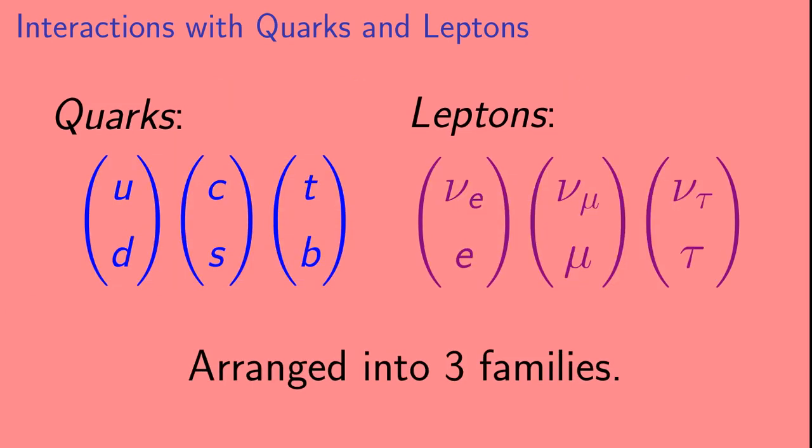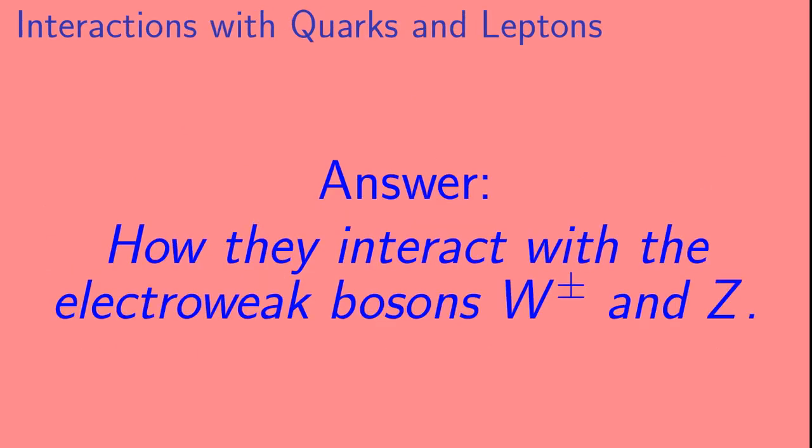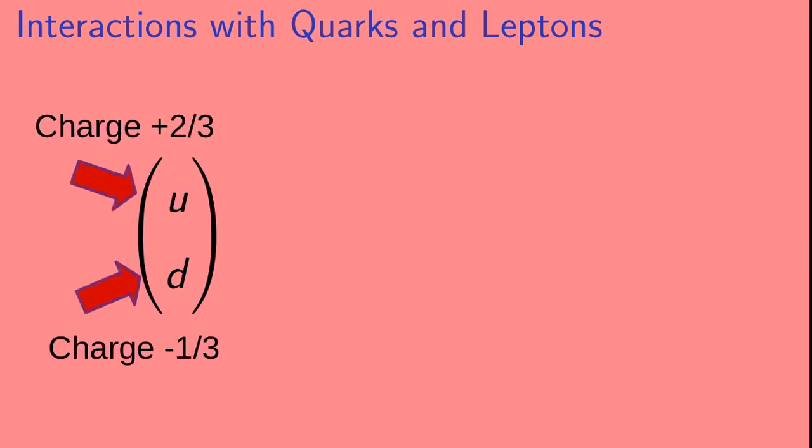Okay, so as we saw, the quarks and leptons are each arranged into three families. But what determines how they are paired? For example, why is the partner of the up quark, the down quark, and not the bottom quark? And the answer is, it's related to how they interact with the electroweak bosons W and Z. Okay, so let's look at the first family, which contains the up and down quarks. The up quark has a charge of plus two-thirds, and the down quark has a charge of minus one-third. This pairing, whether you're talking about the quarks or the leptons, is called a doublet.